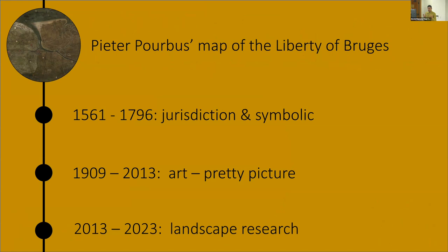It's the map of Pieter Purbus. It changed functions throughout its life. First it was made by the Liberty of Bruges — which was a viscounty — to map the jurisdiction of its territory, and it had a very large symbolic function also. It was a large wall map in Italian style, and this symbolic function is probably the reason why it disappeared in the French period, the occupation by Napoleon. Then it reappeared from an attic in the beginning of the 20th century and went straight into the Fine Arts Museum, where it has functioned as just a pretty picture.